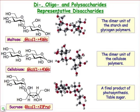Having looked at the chemistry of monosaccharides in some detail, we're now ready to move on to some more complex sugar chemistry that involves the joining together of monosaccharides. If we join 2 monosaccharides together, we'd be talking about disaccharides. 3 or more monosaccharides coming together makes the oligosaccharide, and if we are talking about bringing together a large number of monosaccharides, we're talking about the polysaccharides.